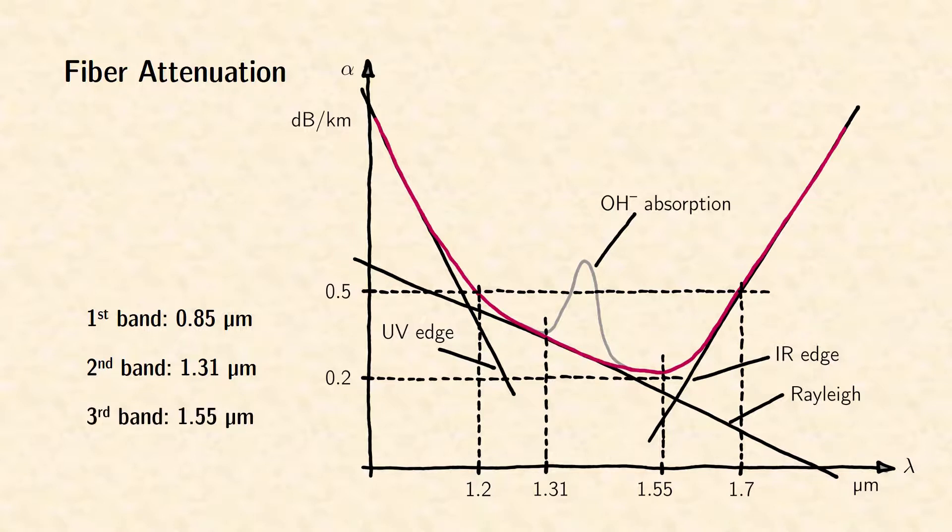When the Erbium-doped fiber amplifier at 1.55 micrometer was invented in the 1990s, data communication moved to this third communication band. Fiber amplifiers enabled optical data transmission over thousands of kilometers through oceans and continents in a very economical way.